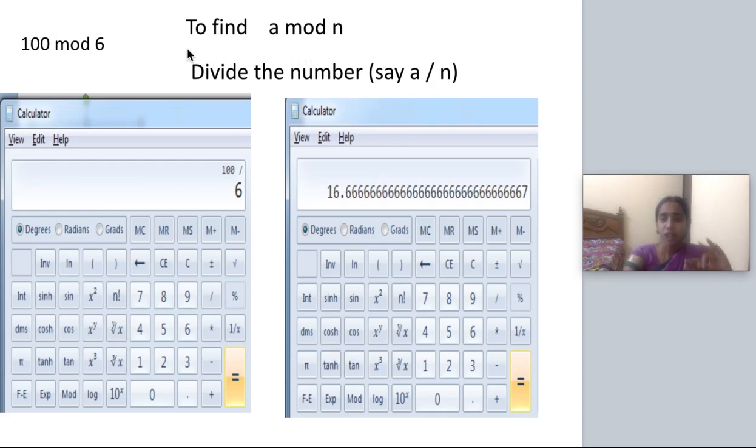It is a three-step process. You have to divide the number with the divisor. Here n is the divisor and a is the dividend, so a divided by n. You are doing as usual, 100 by 6.